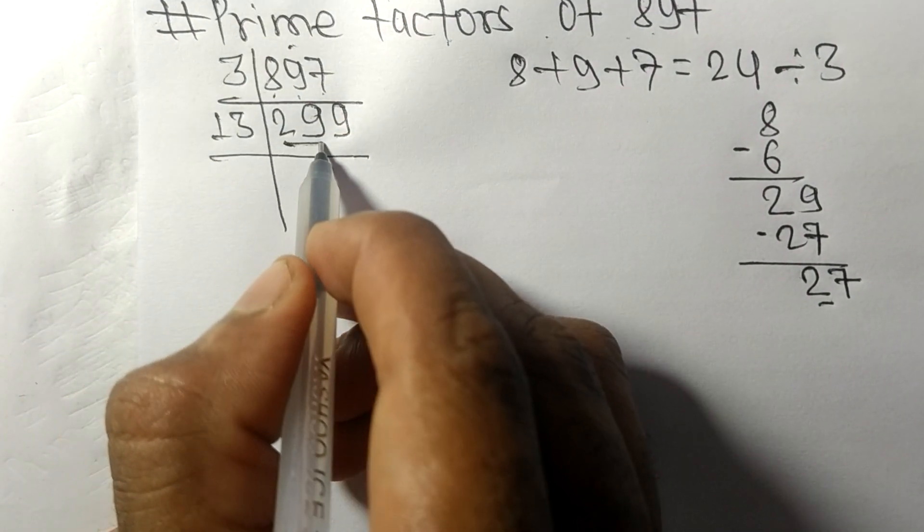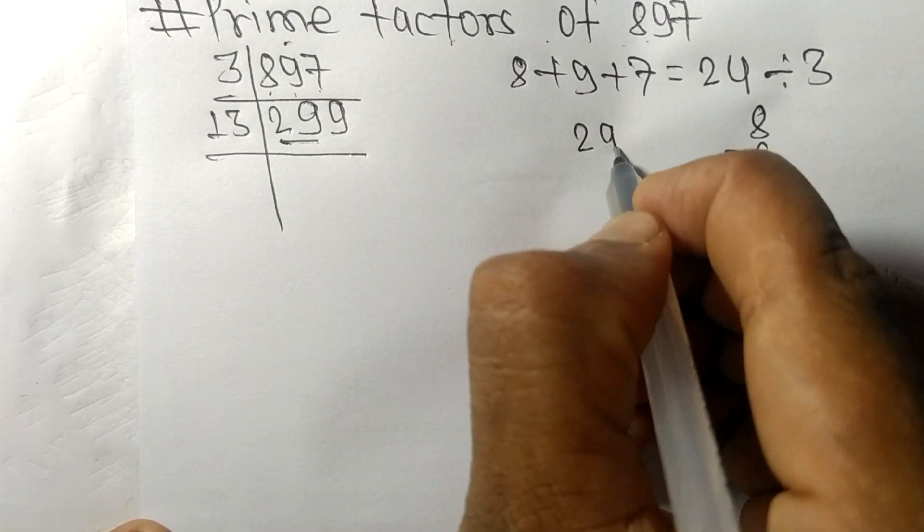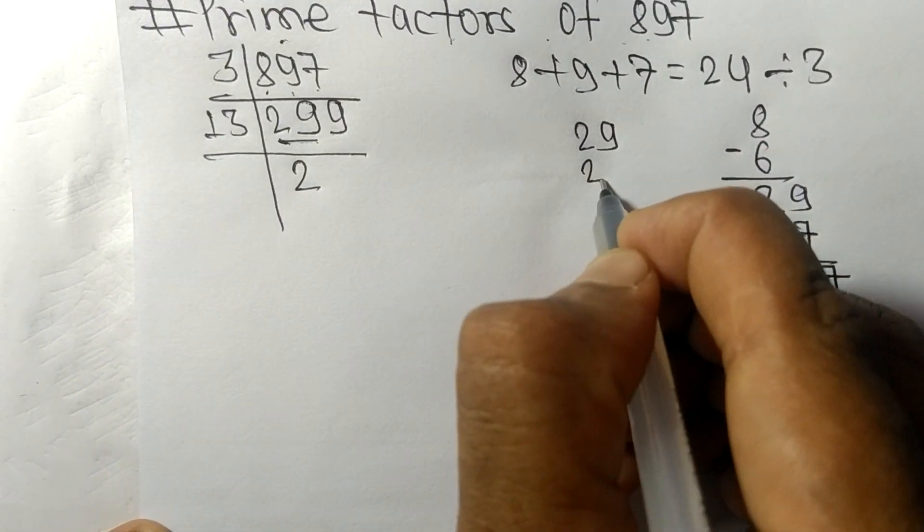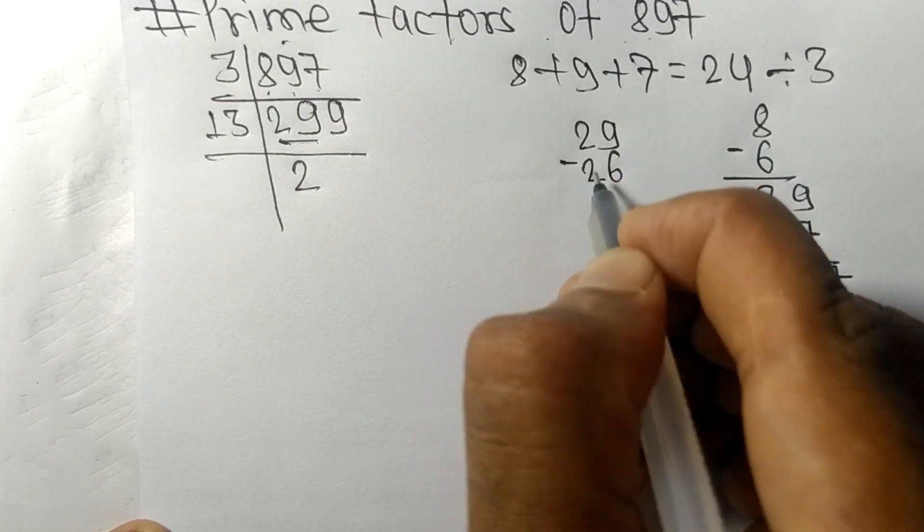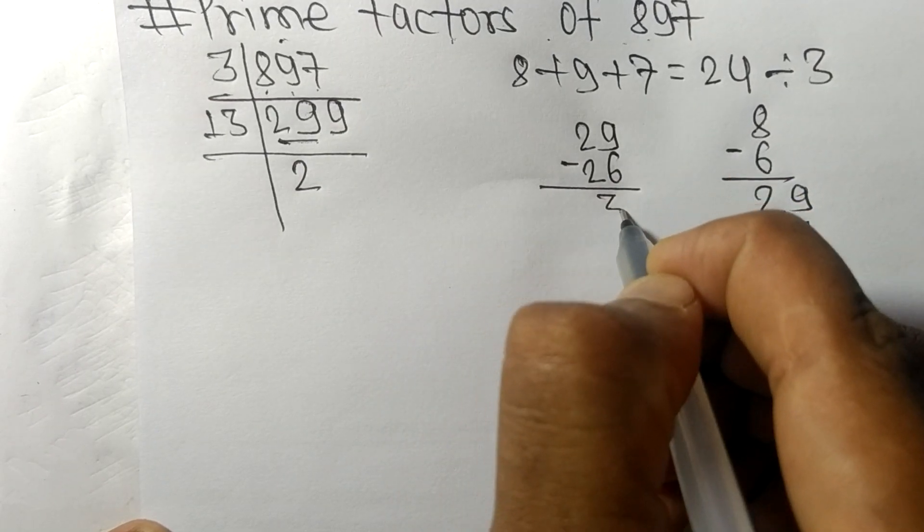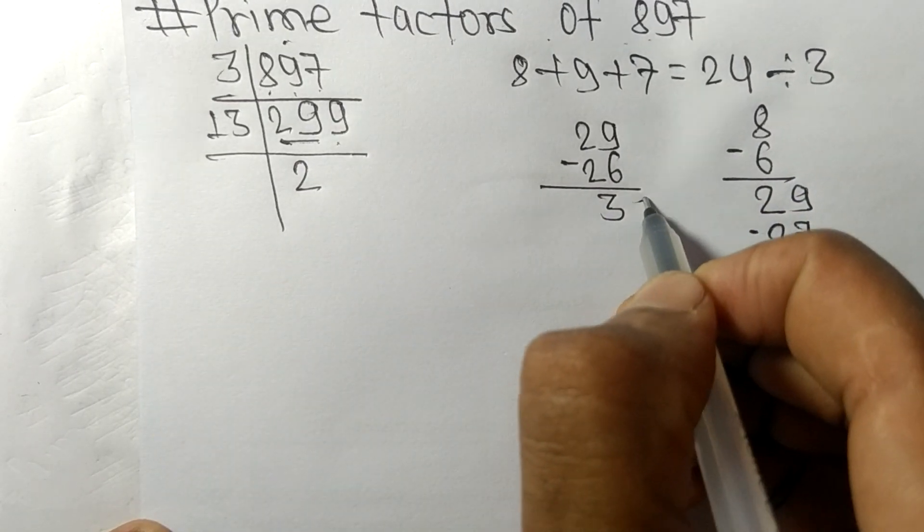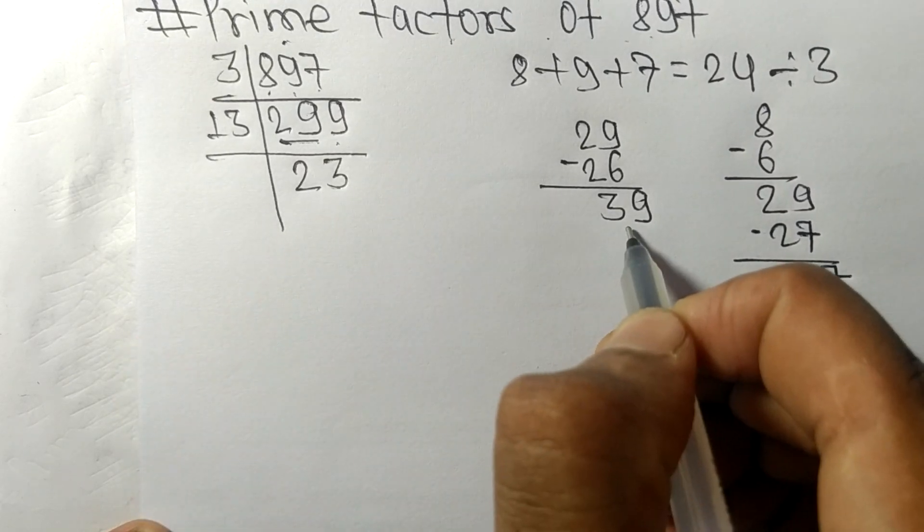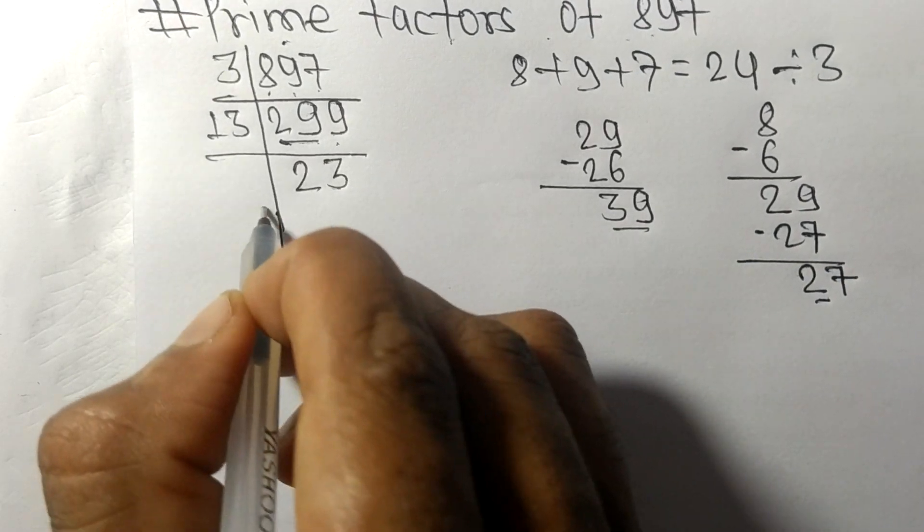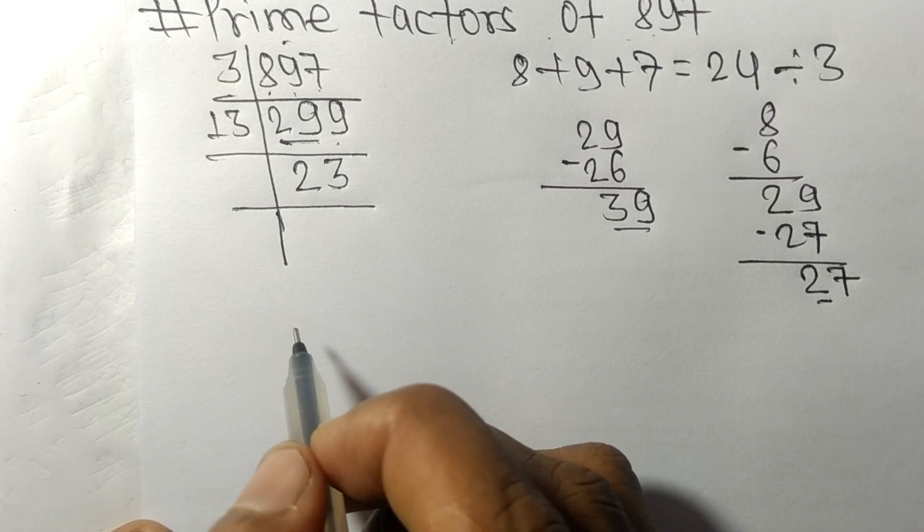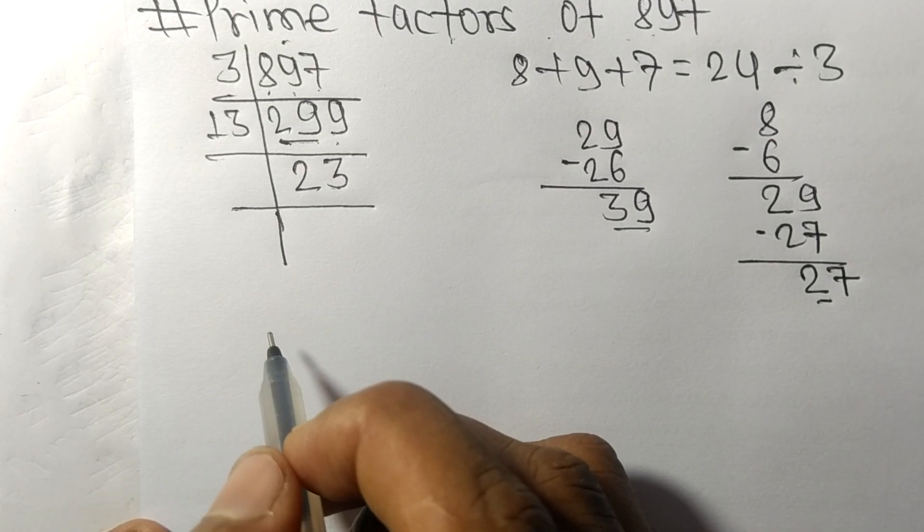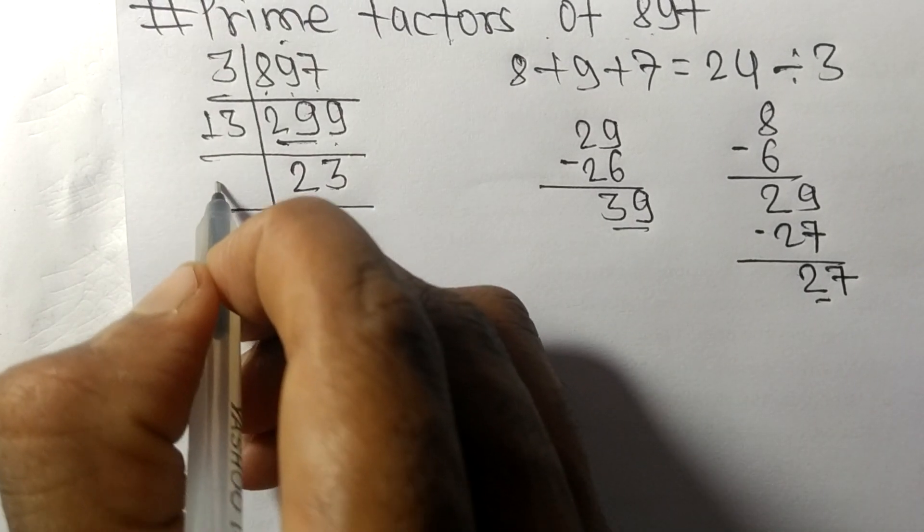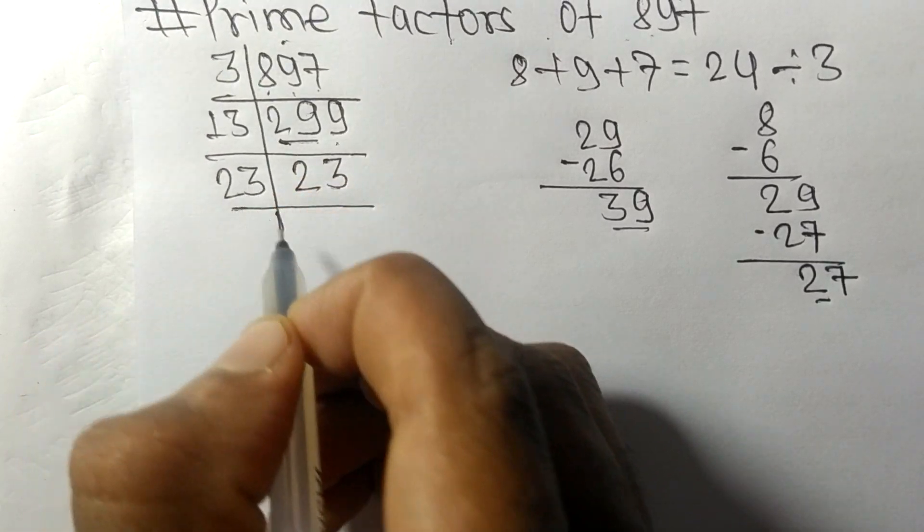So 13 times 3 means 39. Now we got 23, which is a prime number, so it is exactly divisible by 23 only. And on dividing we get 1.